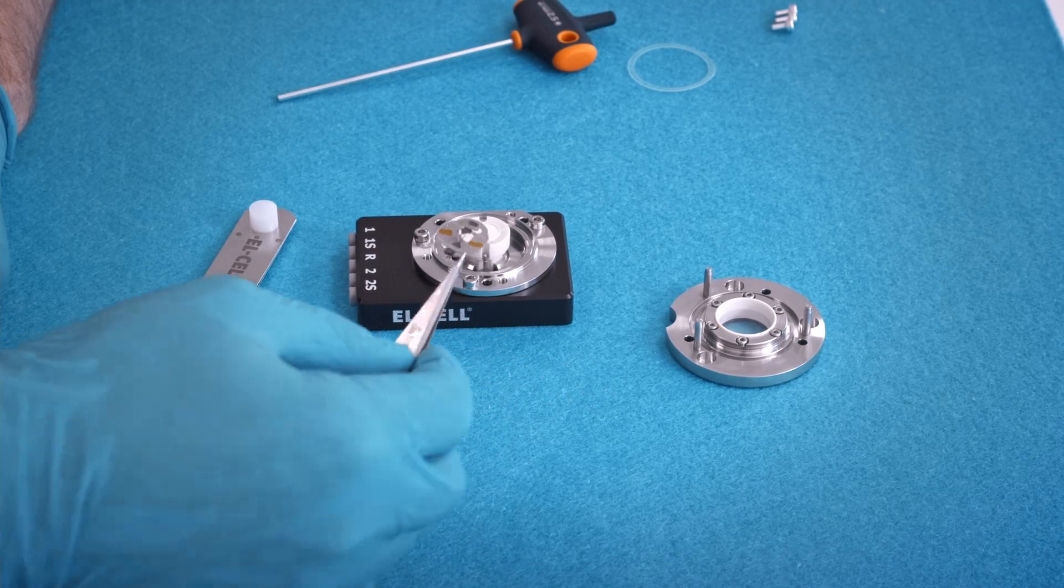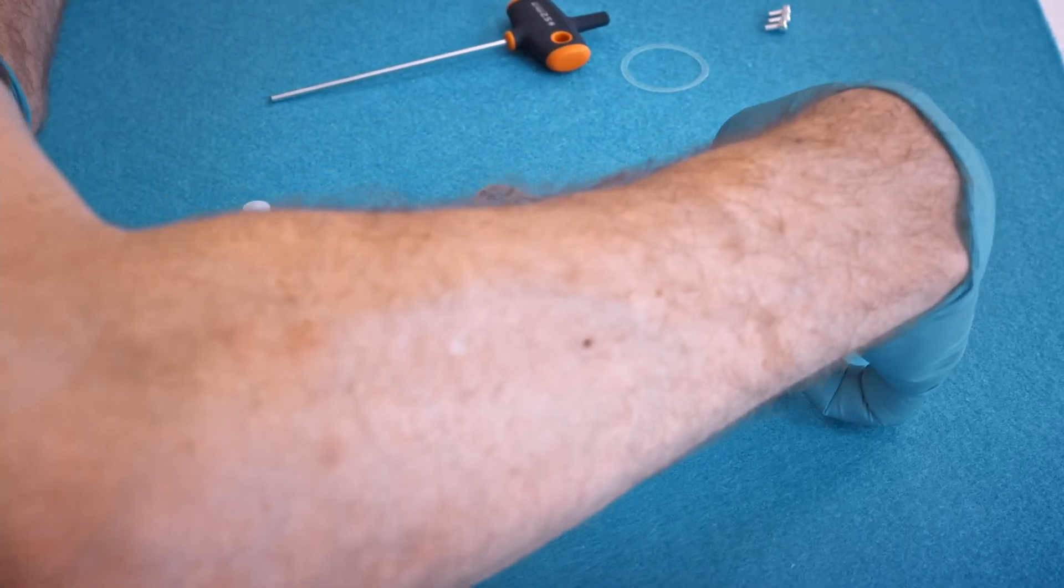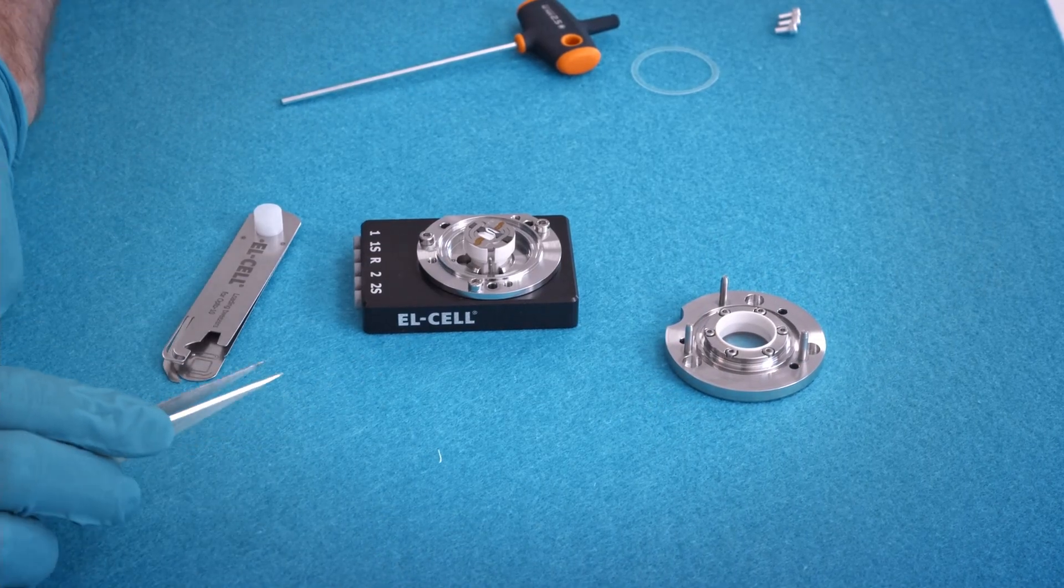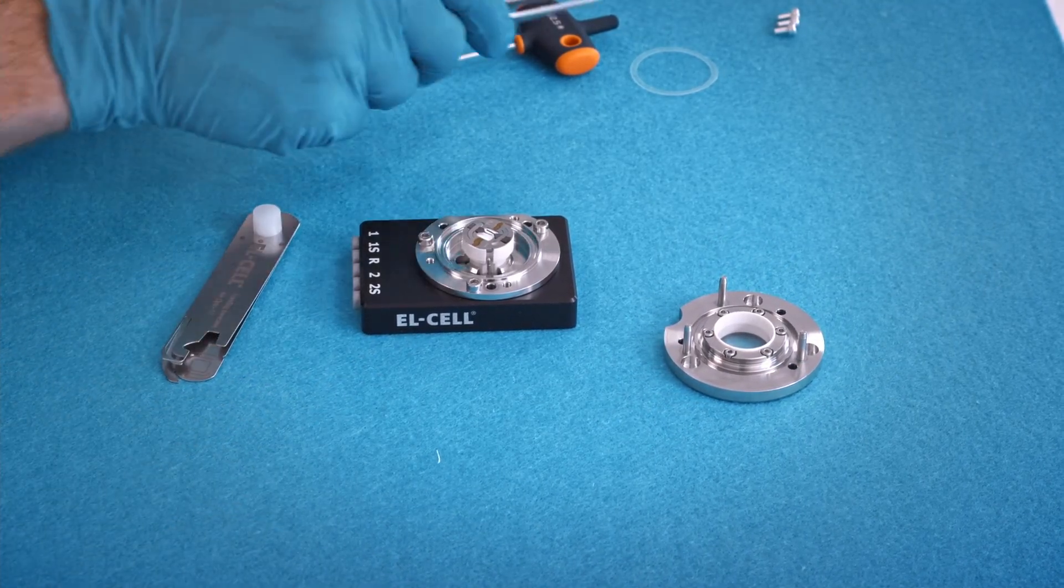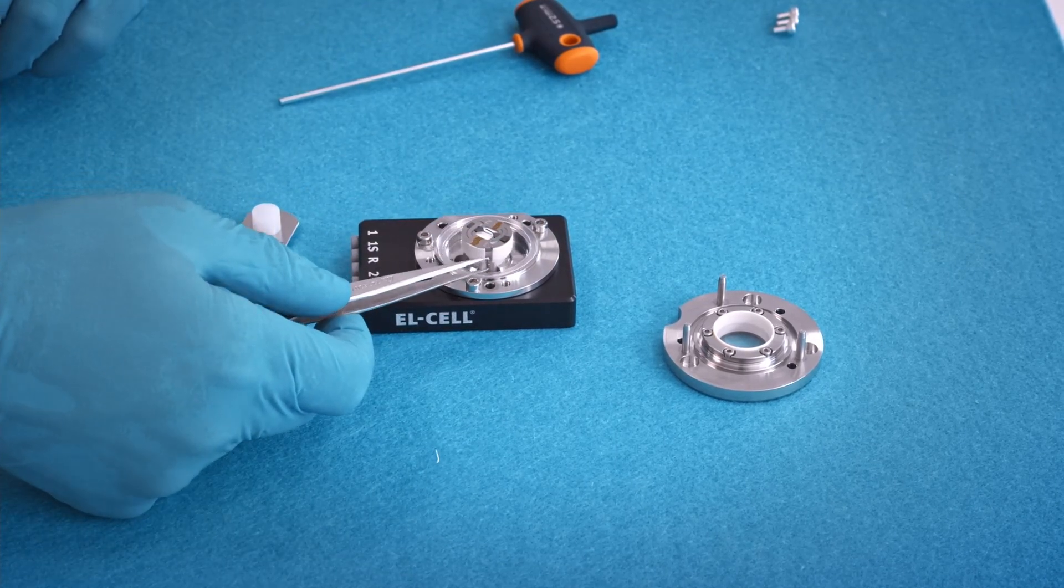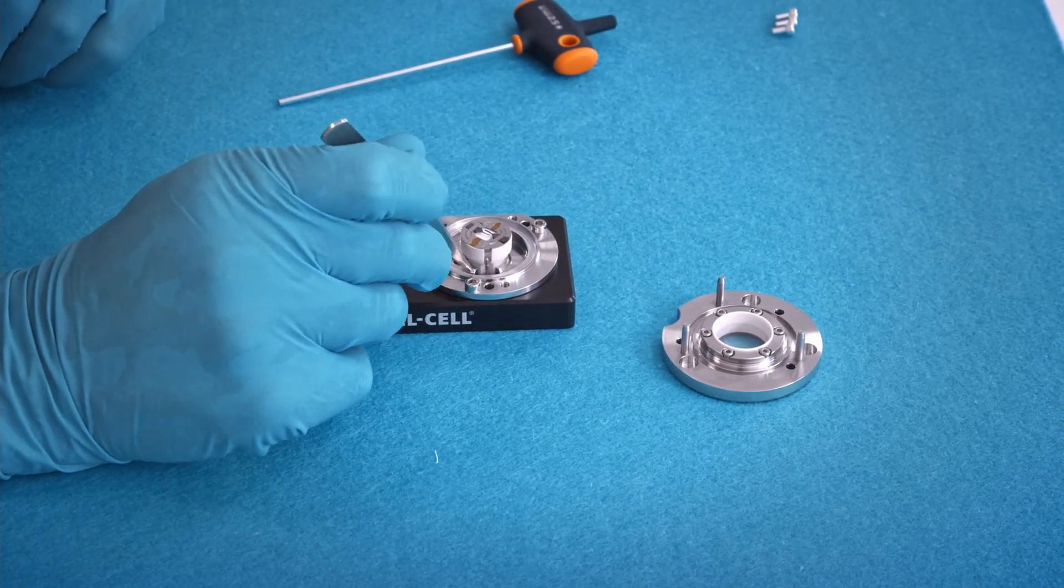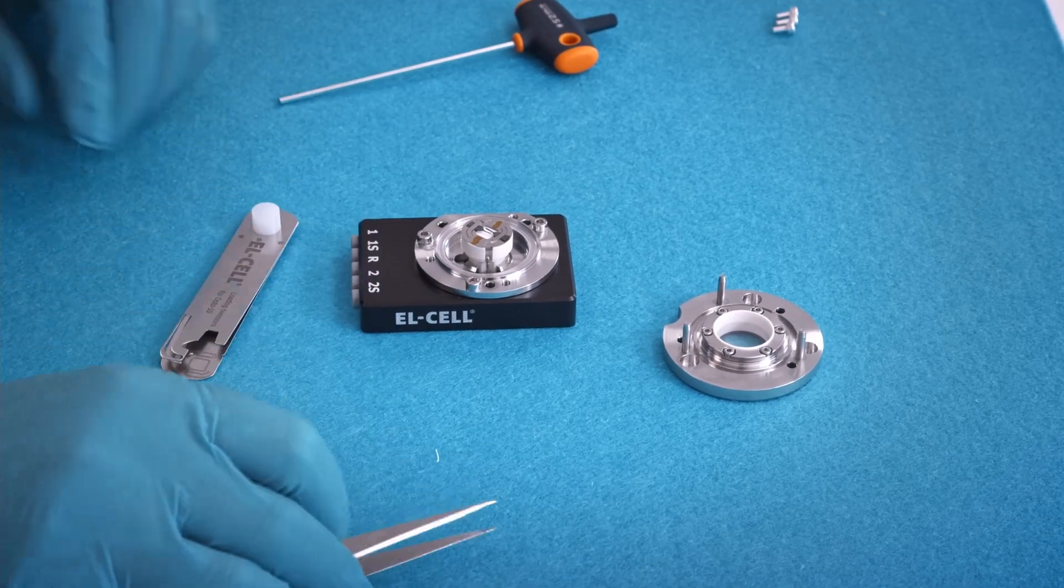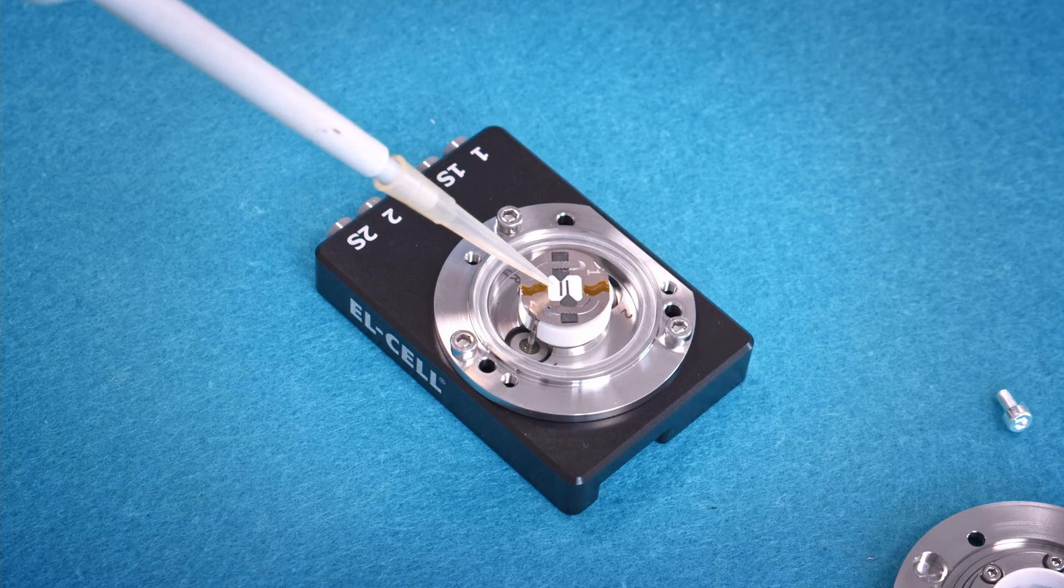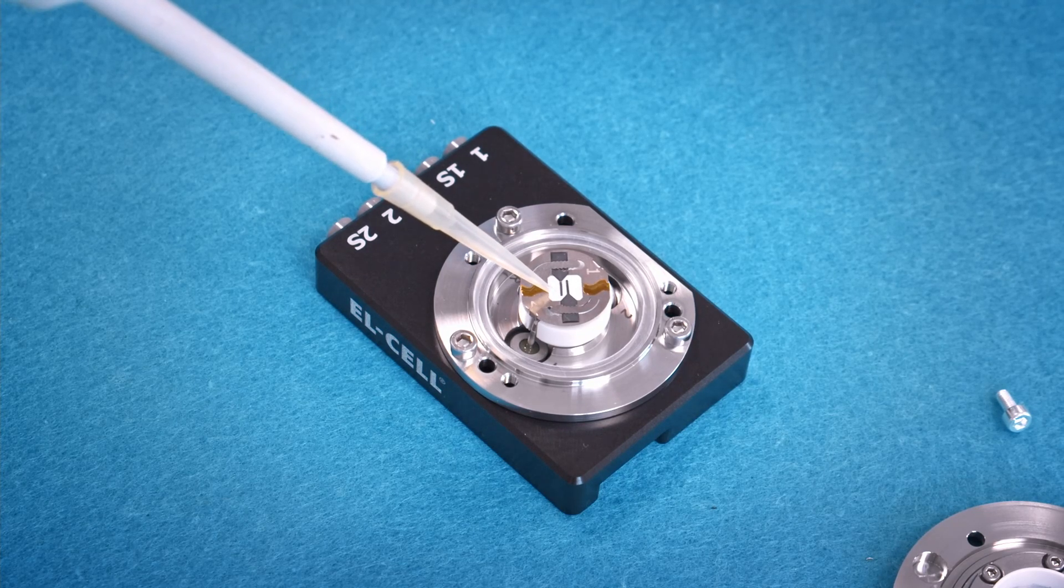Then we insert the sample holder with the electrode strips attached. Put the seal in place. Add some electrolyte onto the separator and the electrode strips.